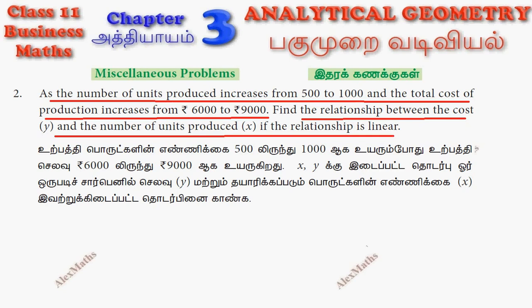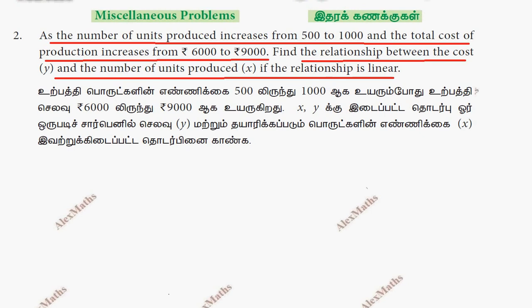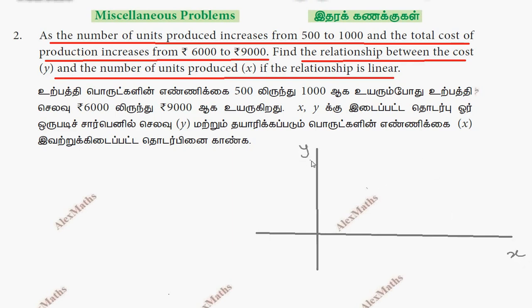So this is one of two points, one of coordinates. So this is the number of units — x and y axis. y is the cost, and x is the number of units.